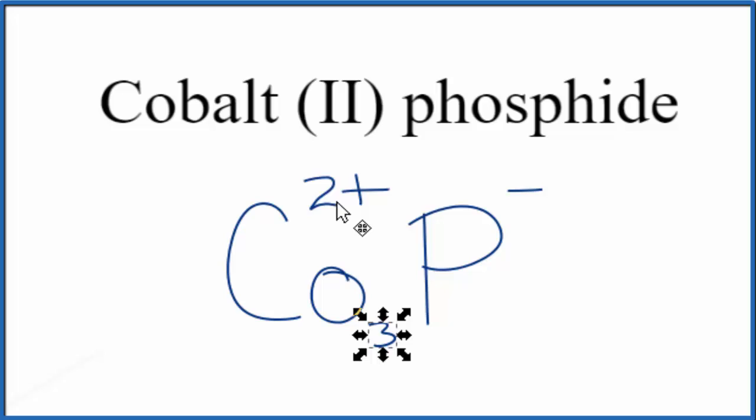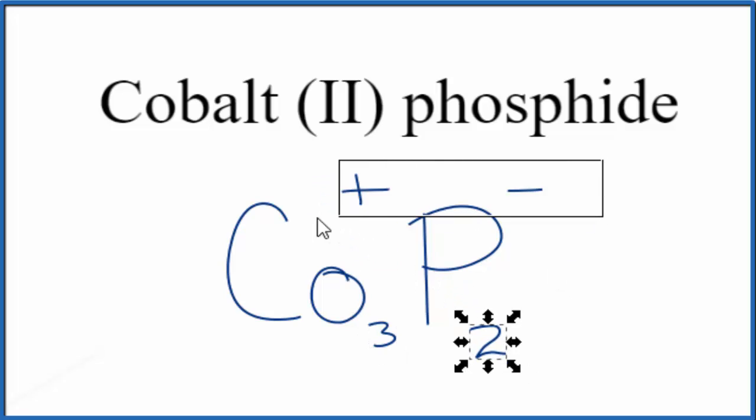We'll move the 3 here and the 2 here. Get rid of these symbols. And this is the formula for cobalt (II) phosphide.